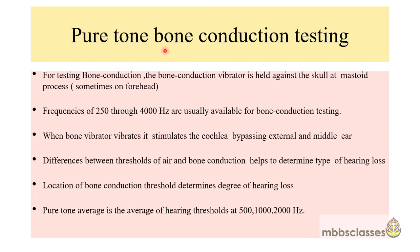When measuring bone conduction hearing thresholds, a bone conduction vibrator is held against the skull at the mastoid process, sometimes on the forehead. Vibrations of frequencies ranging from 250 to 4000 Hz are presented. The bone vibrator stimulates the cochlea directly, thus bypassing the external ear and middle ear. Bone conduction threshold therefore gives an interpretation of inner ear functioning. The difference between air and bone conduction thresholds helps determine the type of hearing loss: conductive, sensorineural, or mixed.